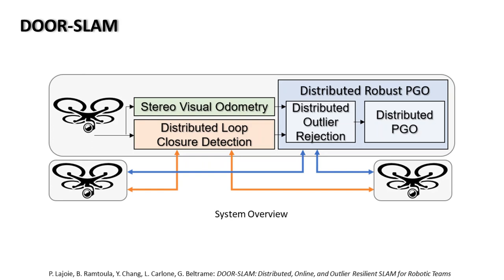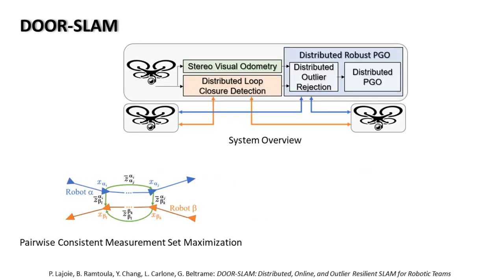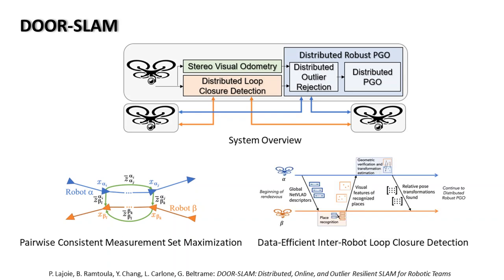DoorSlam is a distributed SLAM system with an outlier rejection mechanism that can work with less conservative parameters. The system is based on peer-to-peer communication and does not require full connectivity among the robots. DoorSlam includes two key modules: the first is a distributed pose graph optimizer combined with a distributed pairwise consistent measurement set maximization algorithm to reject spurious inter-robot loop closures. The second is a data efficient peer-to-peer SLAM front end to detect inter-robot loop closures.